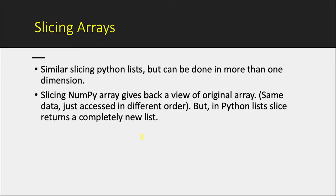Slicing is very similar to slicing of Python lists, but the difference is that it can be done in more than one dimension. There is one more difference which is even more important: slicing in a NumPy array gives back a view of the original array. So the original array lies somewhere in memory and some variable points to it as the complete view of that memory, but you can slice some parts of that memory and store it as a different variable. That variable is also pointing to the same memory, just a different view of it. So if you modify this new variable it's reflected in the original variable as well. But in the case of Python lists, when you slice it, it returns a completely new list — and we will see an example of this.